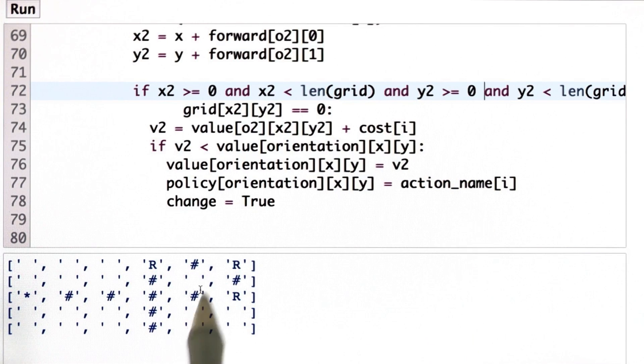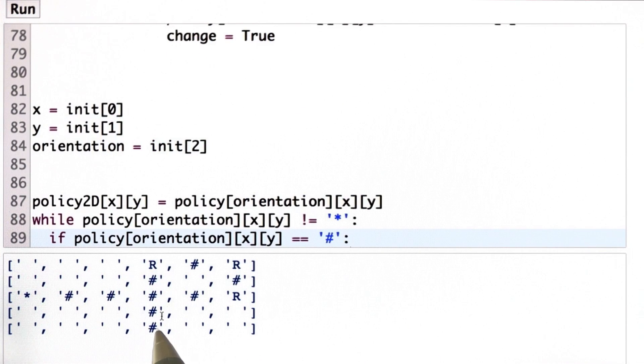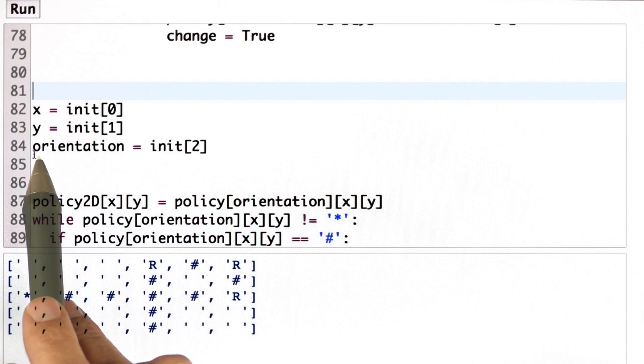However, I printed out a two-dimensional table, not a three-dimensional table. To get to the two-dimensional table, I now need to be sensitive of my initial state. Otherwise, it actually turns out to be undefined.